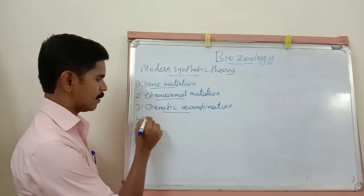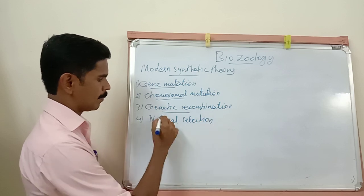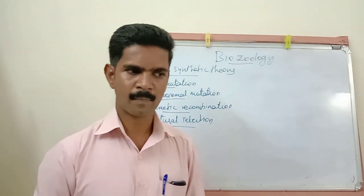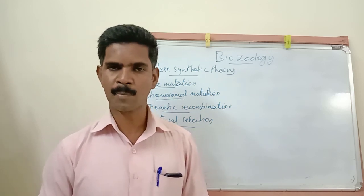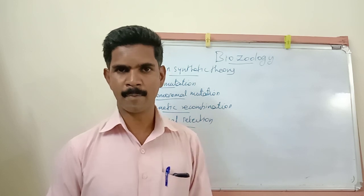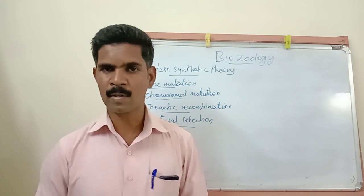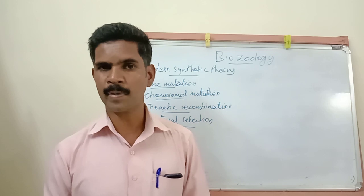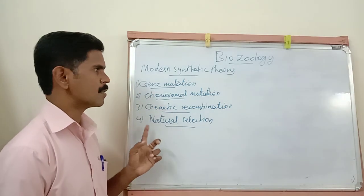The fourth factor is natural selection. According to this concept, nature will not produce any variations. But once any changes occur, it automatically leads to some genetic variations or genetic changes. So nature does not produce changes but acts upon them once they appear.